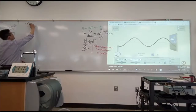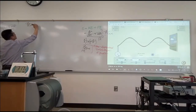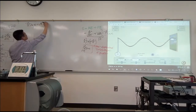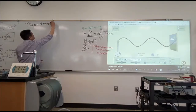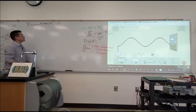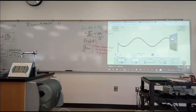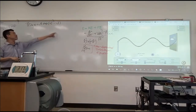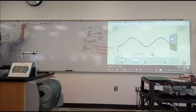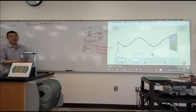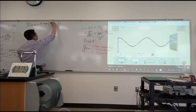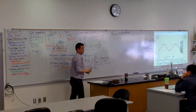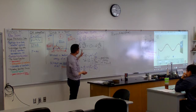Our universal guess is the plane wave solution — it takes the form of a complex exponential. So ψ(x,t) equals A times e^(i(kx − ωt)). That's our guess. Let's see if this is actually a solution to this differential equation — it might be, might not be. That's the whole idea of guessing.